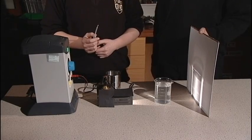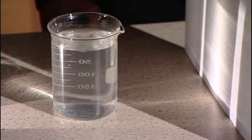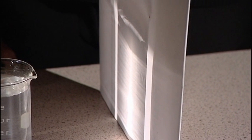By shining the light from a ray box through a beaker of water and onto an upright sheet of white card, you can create a beam of light that appears as a sharp vertical line.